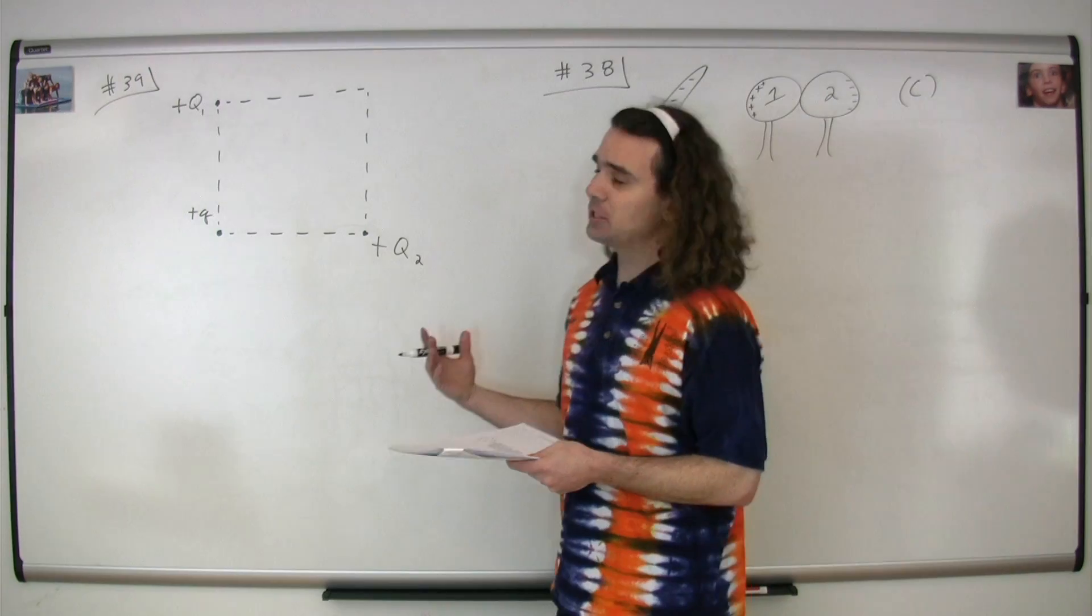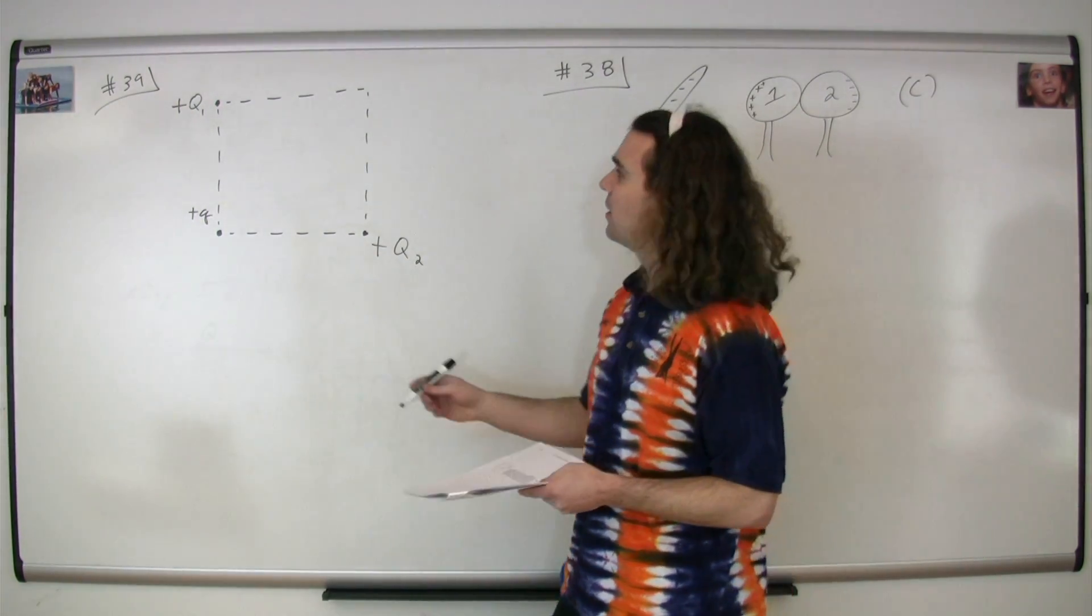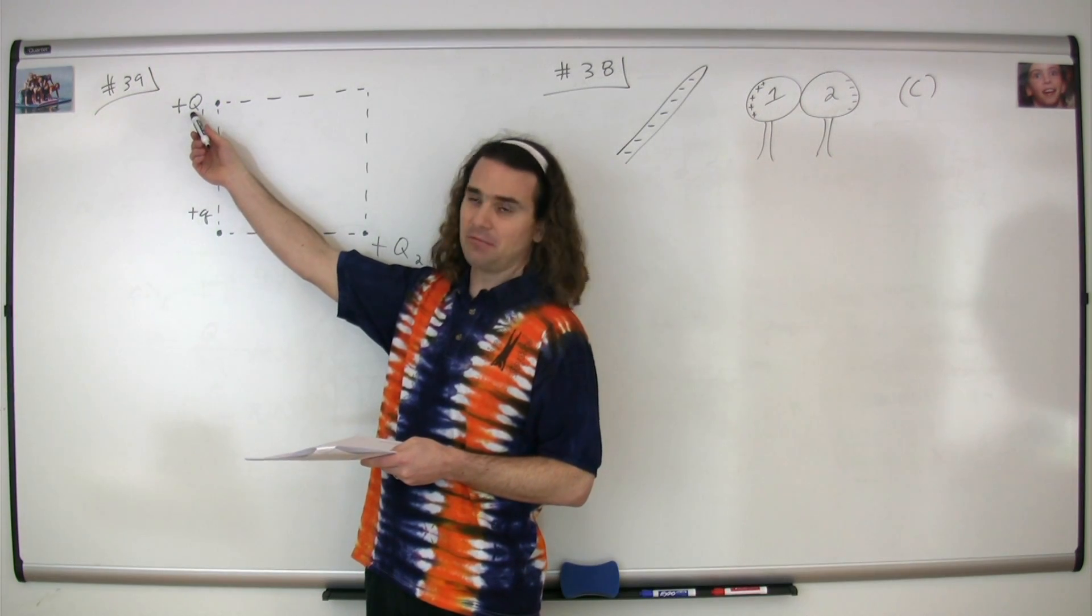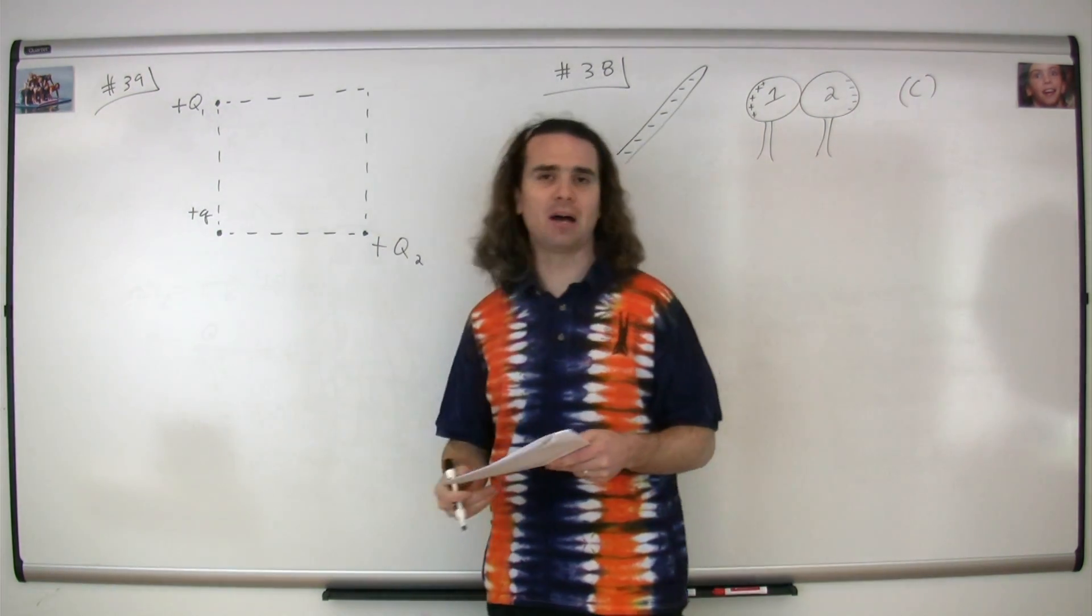Question number 39. We have three charges arranged on three corners of a square. This one I'm calling positive big Q1, this one I'm calling positive big Q2, and this one is positive little q.